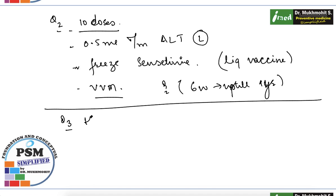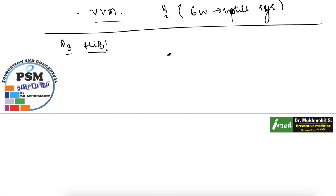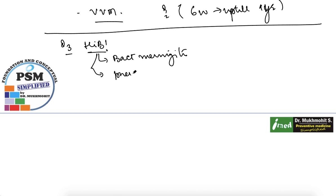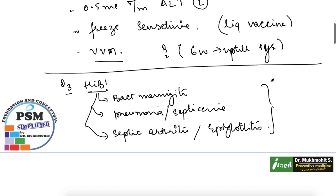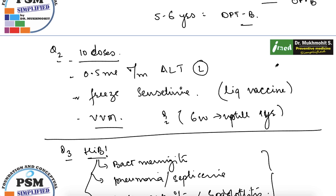A question can also be asked that pentavalent includes H. influenzae b, which is a newly introduced vaccine. H. influenzae b is a notable causative factor for bacterial meningitis, community-acquired pneumonias, septic arthritis, epiglottitis, and other diseases. Remember that H. influenzae b is newly added for these diseases, and the pentavalent is a single vial containing 10 doses.